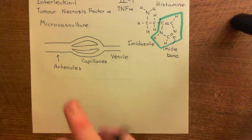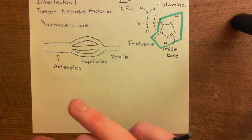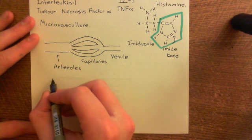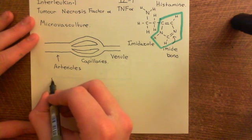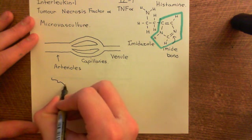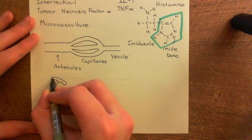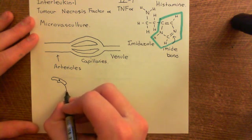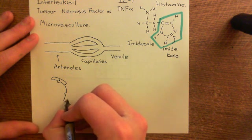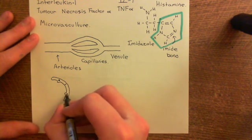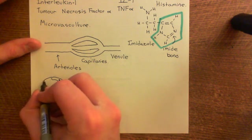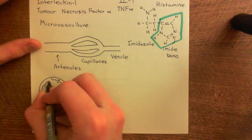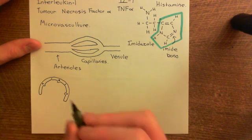If we imagine cutting through an arteriole and looking at it in cross-section, we see the endothelial cells forming a complete tube. The important thing to note is that multiple endothelial cells are needed to make up the entire circumference — that's what's different between the arterioles and venules versus the capillaries.